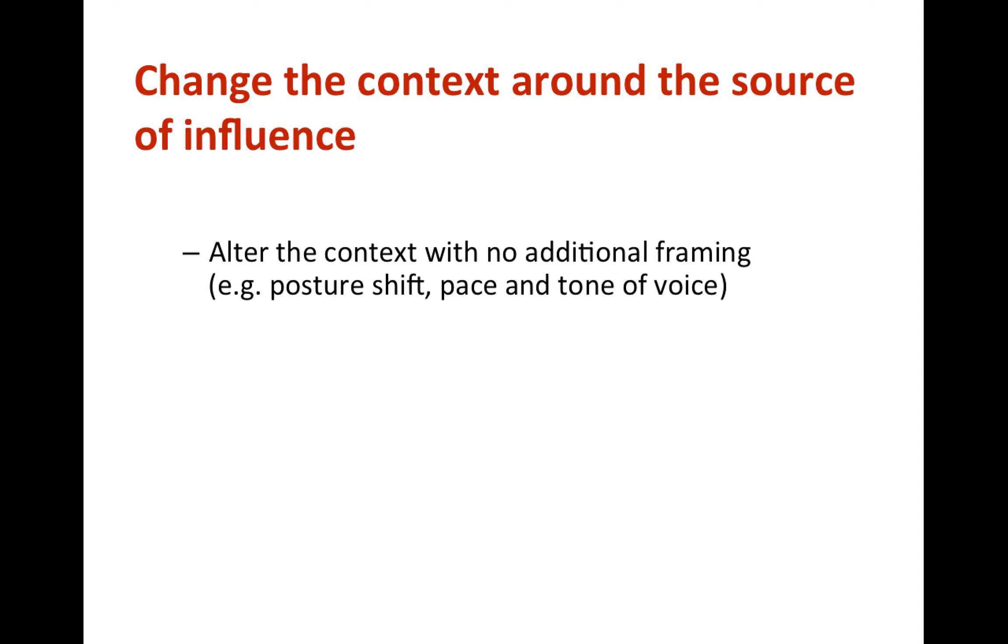At the most basic level, without any additional framing, we can change the context by shifting posture, or change our pace and tone of voice. Imagine, for example, a client who begins to talk about something very personal, and as mentioned before, how worried she is that she might be rejected when she talks about herself. Leaning forward, as she is sharing about her intimate life, could create a context around that fear that changes its impact. She is not rejected, but supported instead. Similarly, slowing down our speech could help a client respond to racing thoughts with less reactivity.